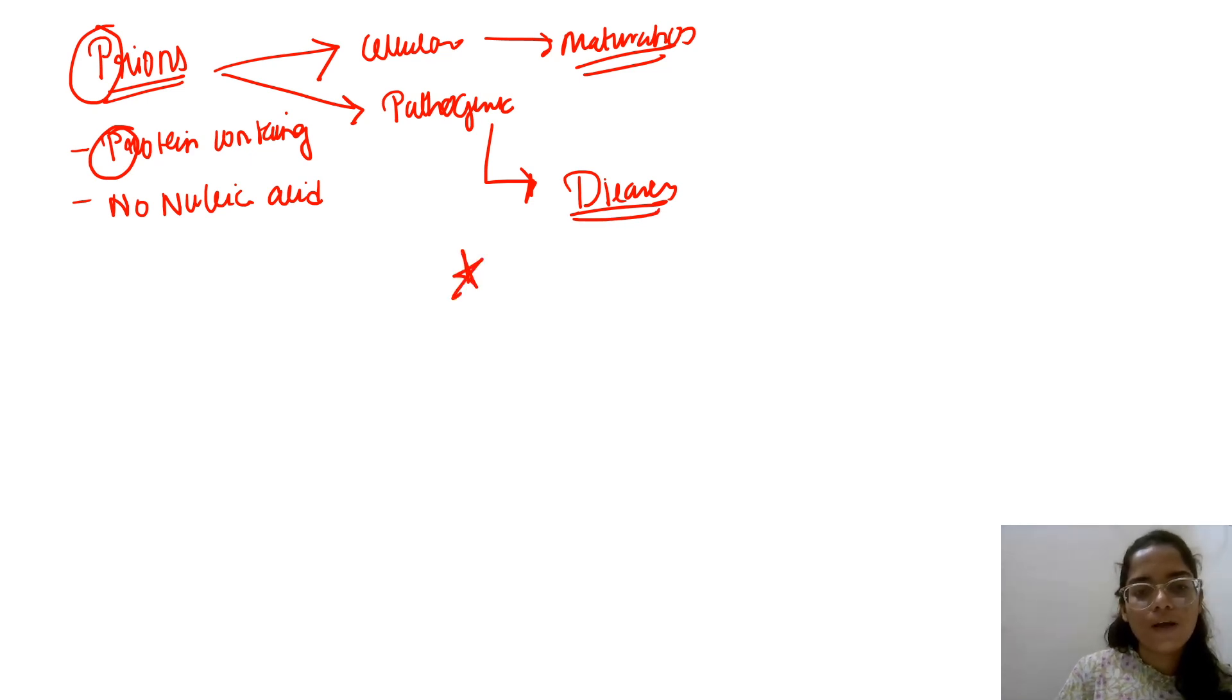In prions, it's important to remember the diseases. Diseases that are caused by prions - I'll tell you some important ones. First one is Bovine Spongiform Encephalopathy, which is also called in common language as mad cow disease.